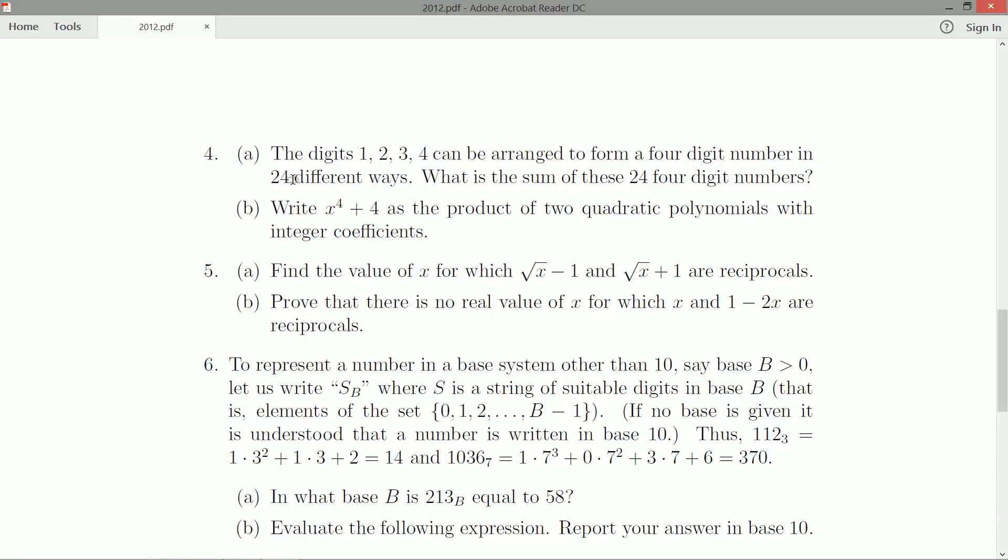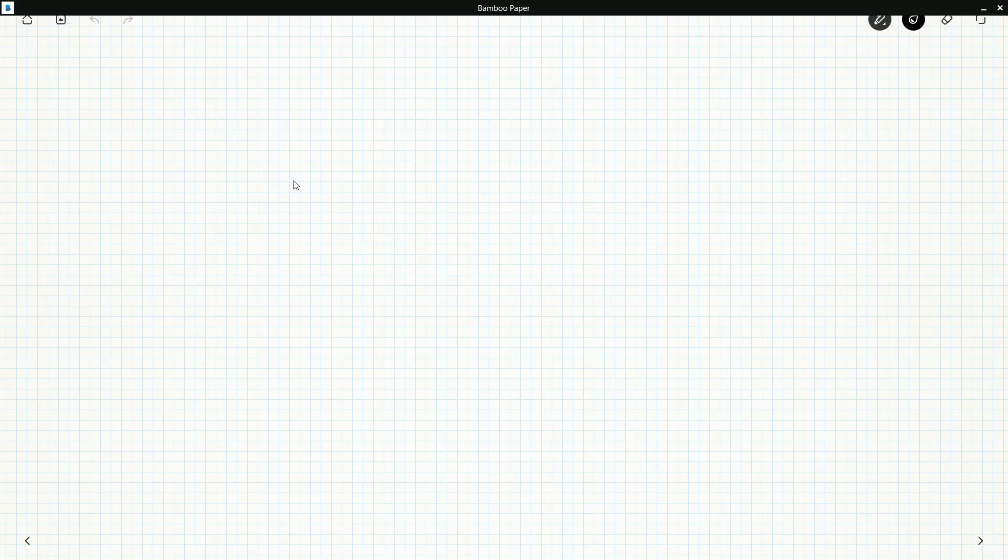The digits one, two, three, four can be arranged to form a four-digit number in 24 different ways. What is the sum of these 24 four-digit numbers? They're absolutely right about the 24 different ways. If we think about a four-digit number, we have four choices for the first spot, then three choices left, then two choices, and finally one choice. Four times three times two times one. Another way to write that is four factorial, and it is 24.